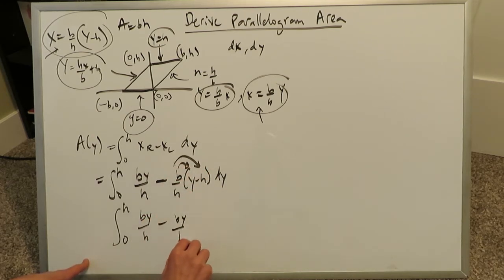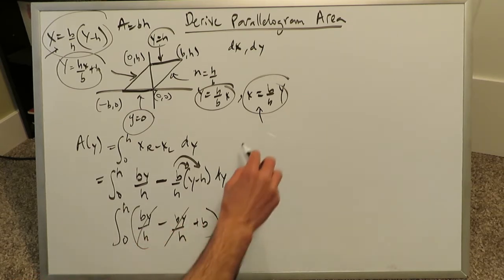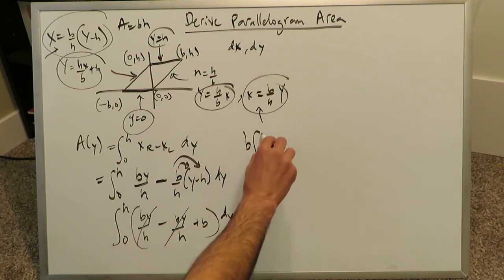These h's will cancel out, and you'll just have plus b with respect to dy. This cancels out very easily, making everything so easy, and this b can come out as a coefficient, so you're looking at something like this.